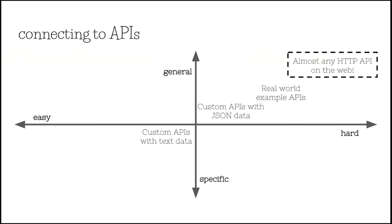And then we let them have at it. In that dotted line, we said: you can do almost any HTTP API on the web now — with a little asterisk. And that asterisk is: some of these APIs are actually more complicated than that.